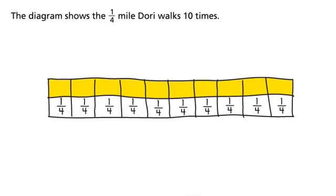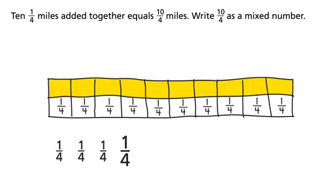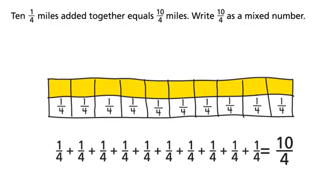The diagram shows the one-fourth mile Dory walks ten times. Ten one-fourth miles added together equals ten-fourths miles. Write ten-fourths as a mixed number.